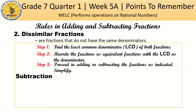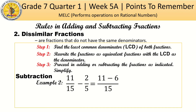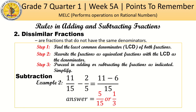How about subtraction? The same process as addition. Let's get the LCD of 15 and 5, which is 15. 15 divided by 15 is 1, times 11 gives us 11. Copy the operation — subtraction. 15 divided by 5 is 3, times 2 is 6. So minus 6: 11 minus 6 gives us 5 over 15, or 5/15. The lowest term of 5/15 is 1/3.